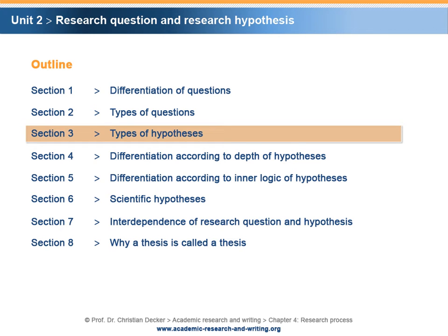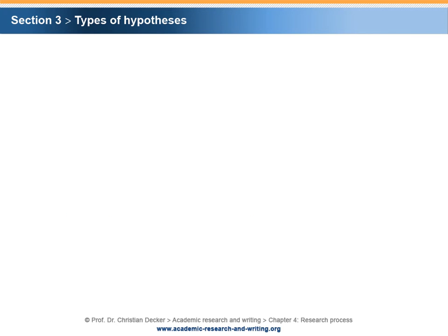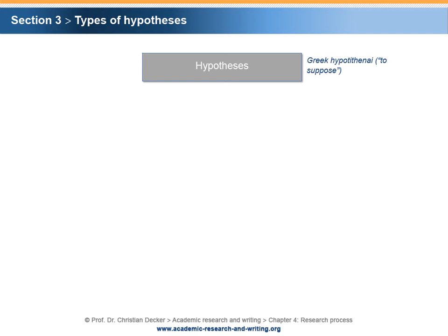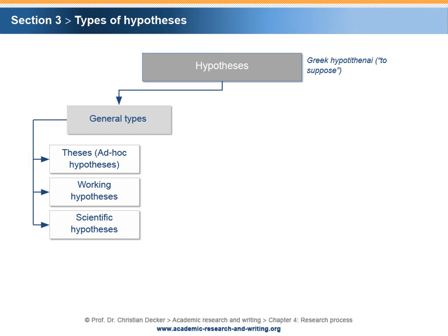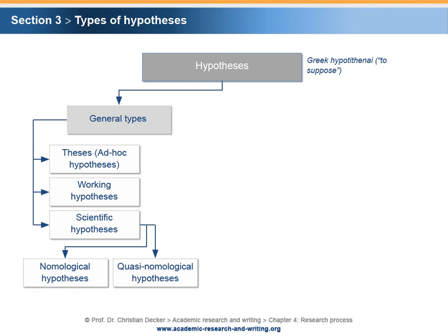Section 3: Types of Hypotheses. In the following, it will be pointed out how hypotheses can be differentiated. The term hypothesis stems from the Greek and means to suppose. Hypotheses can be divided into the following general types: thesis or ad hoc hypotheses, working hypotheses, and scientific hypotheses. Scientific hypotheses can be defined as nomological hypotheses, quasi-nomological hypotheses, and statistical hypotheses.